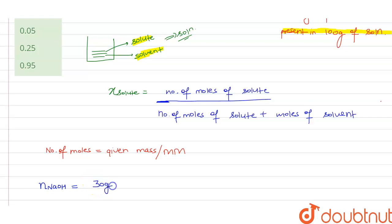We have given the mass of solute as 30 gram. From the periodic table, the molar mass of NaOH is 23 (Na) + 16 (O) + 1 (H) = 40 gram per mole. On solving, we get 0.75 moles of NaOH.